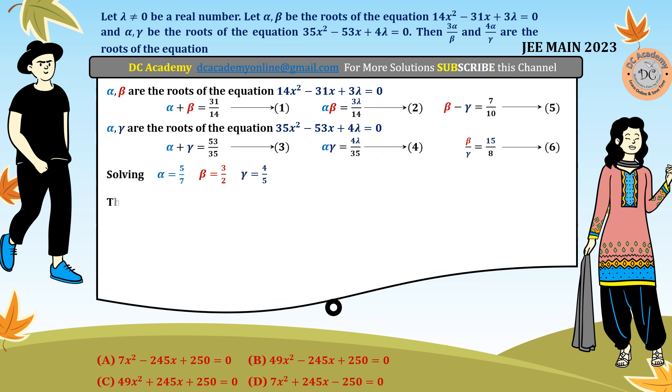Let x₁ = 3α/β. With α and β known, substituting gives x₁ = 10/7. Let x₂ = 4α/γ. Substituting known values, we get x₂ = 25/7.